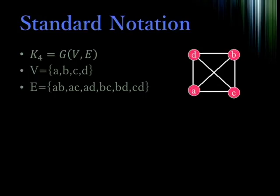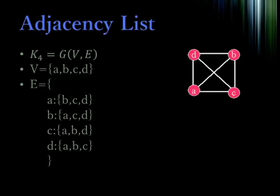V is a set containing A, B, C, and D, and E is a set of the edges between them. I've labeled them for convenience, but they can be labeled however you want. In fact, since we're talking about computers, we should really talk about how this might be stored, so we'll talk about the adjacency list. In the adjacency list, we represent the edges as a set containing a mapping of a node to some other set of nodes. We can see here that A has an edge to B, C, and D, B has an edge to A, C, and D, and so forth.